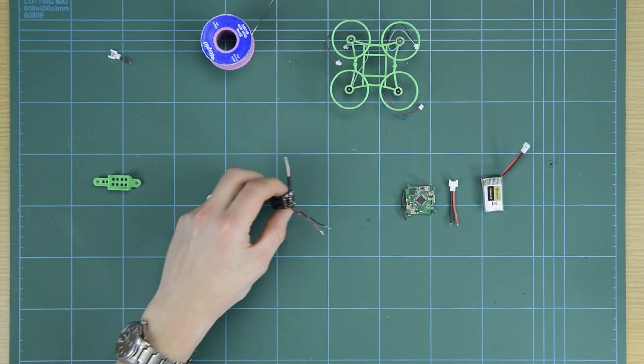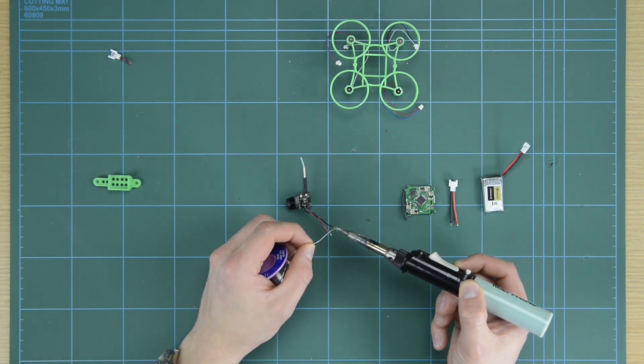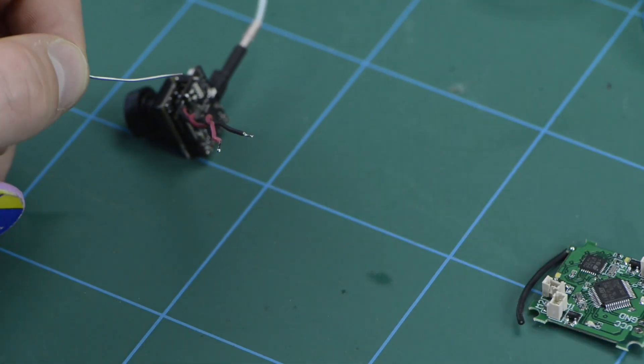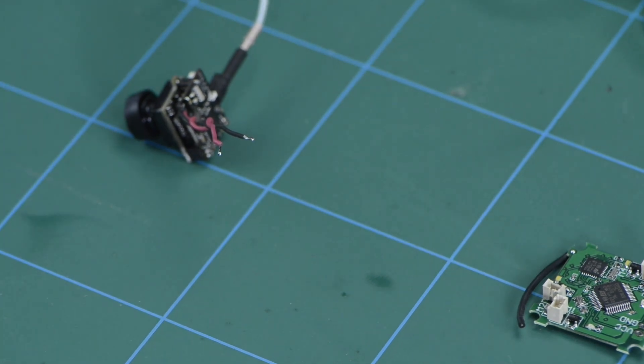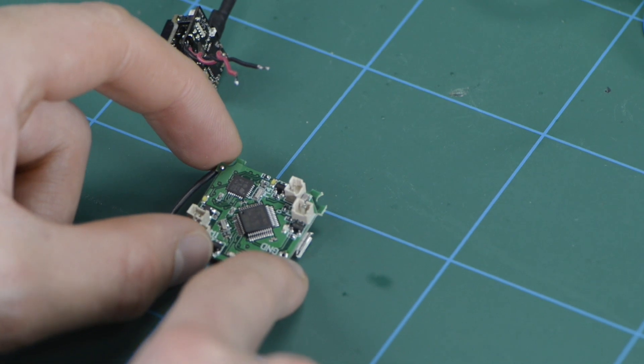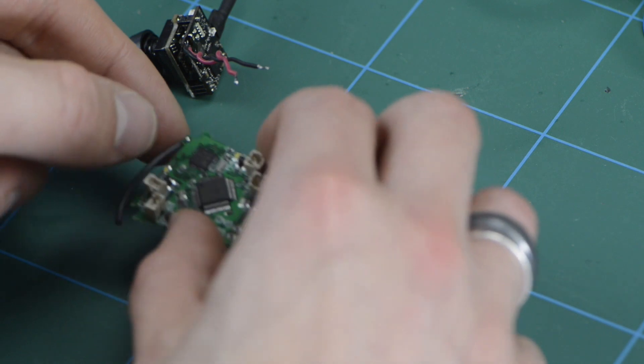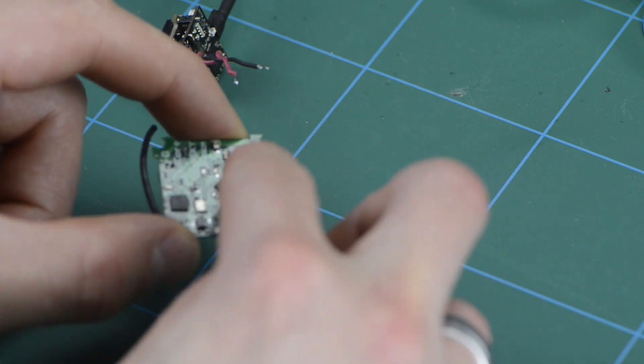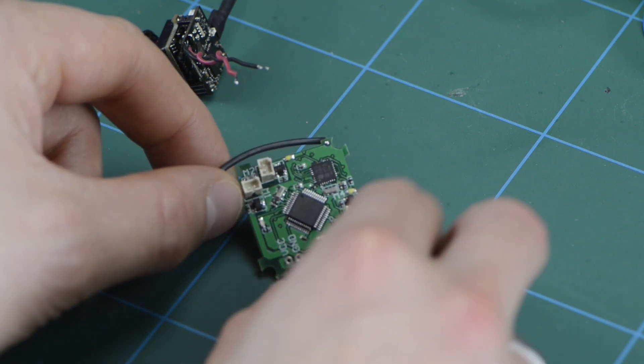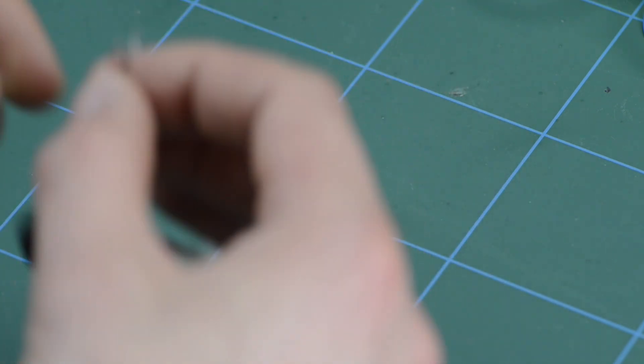We need to tin the wires on the camera. And then the wires need to be soldered to the pads on the bottom of the flight controller. So the bottom is the side with the four motor connectors on it. The top has the USB port and on the bottom we have the VCC and ground connectors.